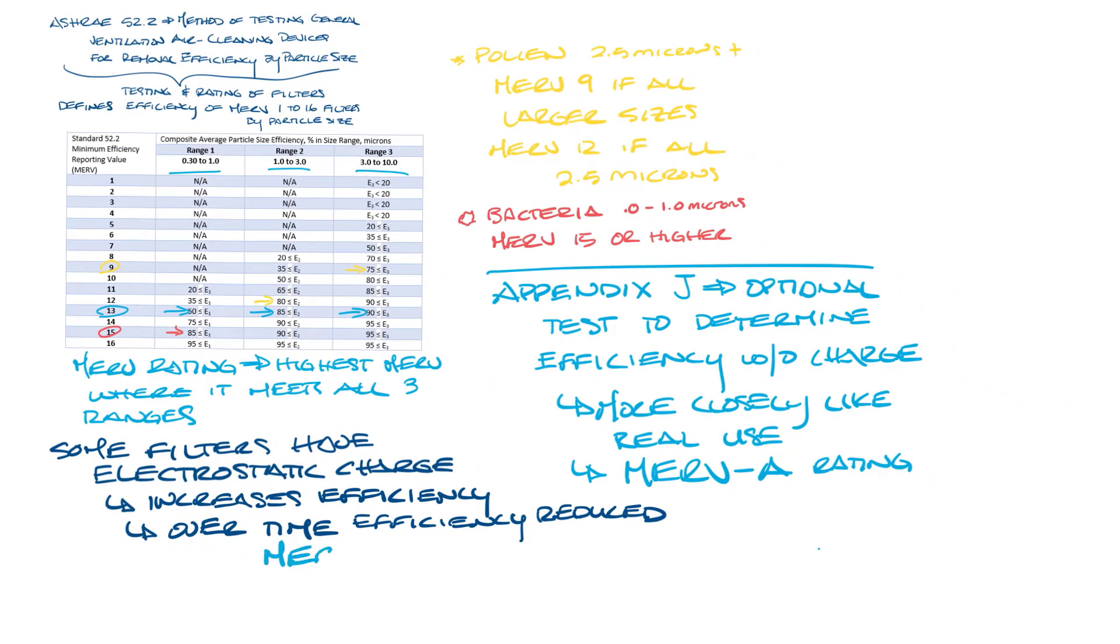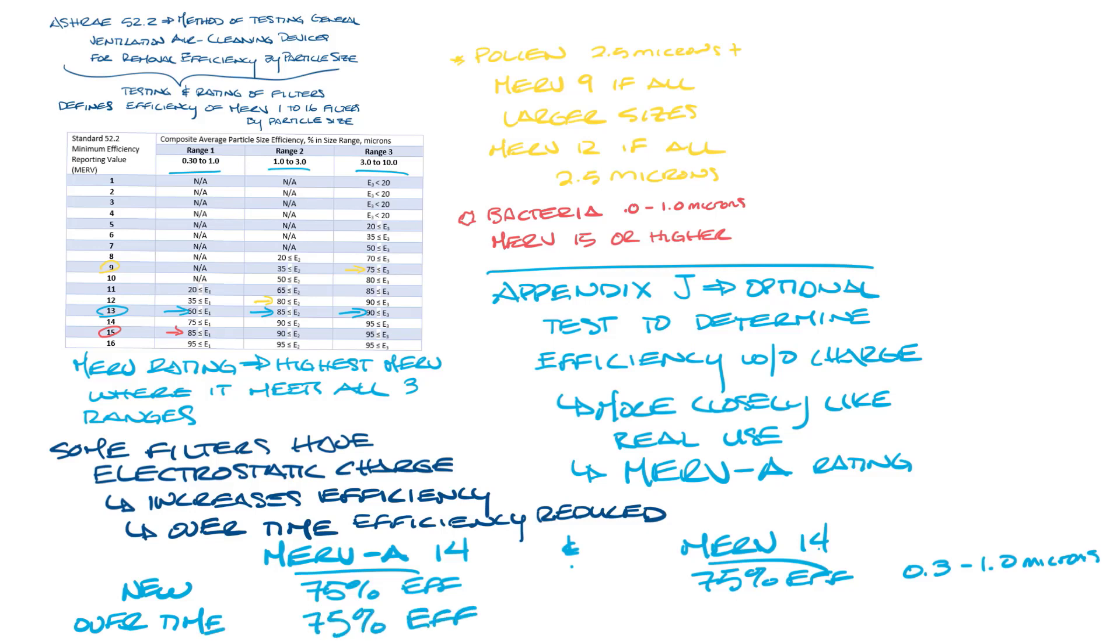For instance, a MERV-A 14 rated filter and a MERV 14 rated filter that has an electrostatic charge may perform the same when new, capturing 75% of the 0.3 to 1 micron particles. But after some use, while the MERV-A 14 filter will still have 75% efficiency, the MERV 14 could drop to effectively a MERV 12, which only captures 35% of those same particles. And that's a pretty big drop in performance.